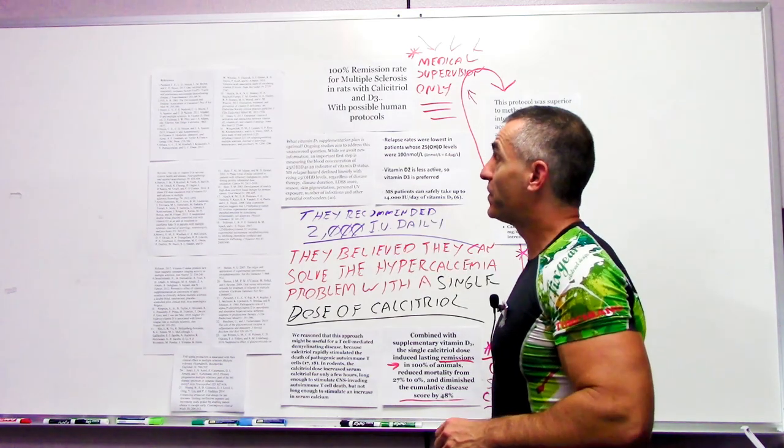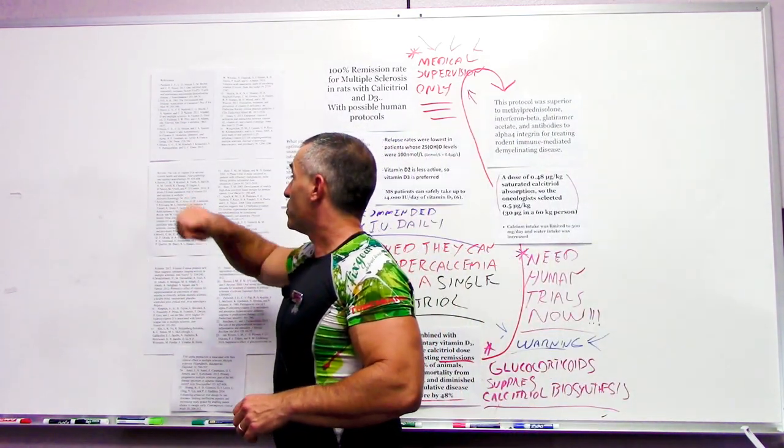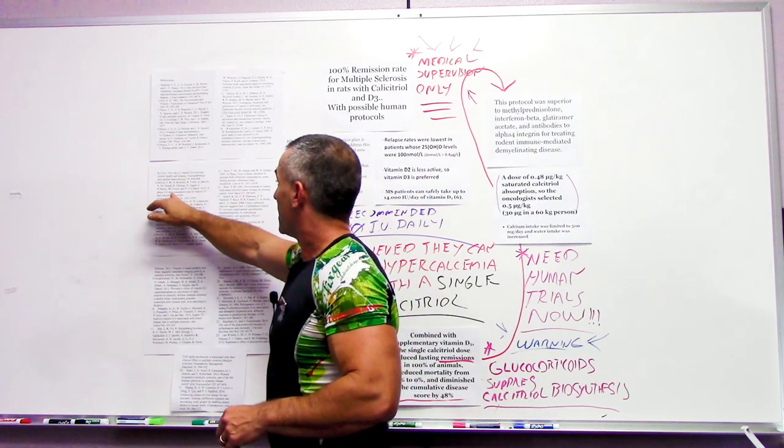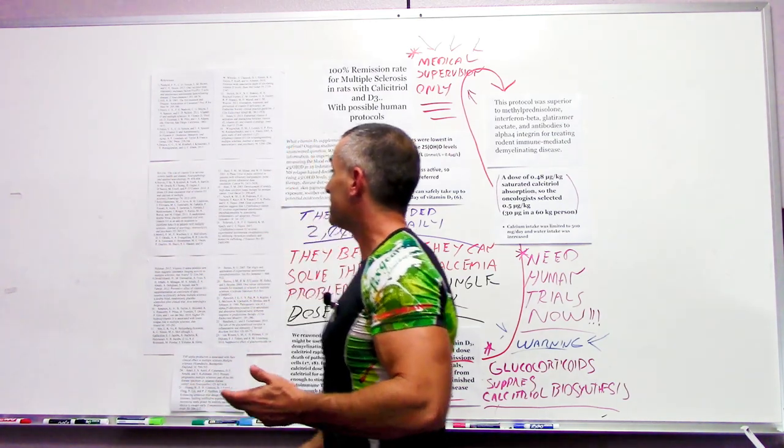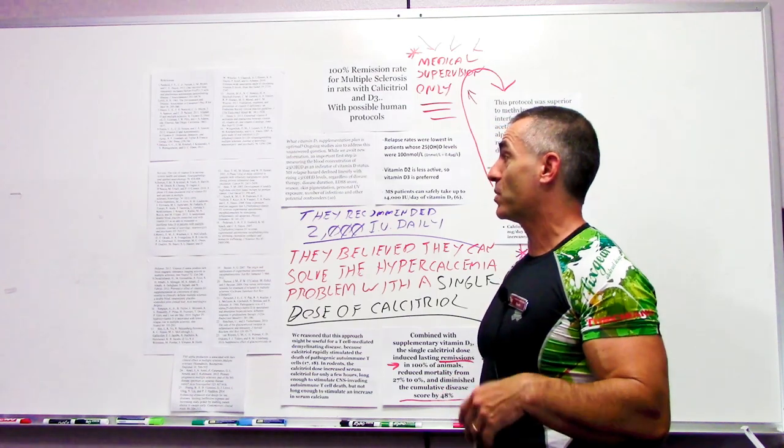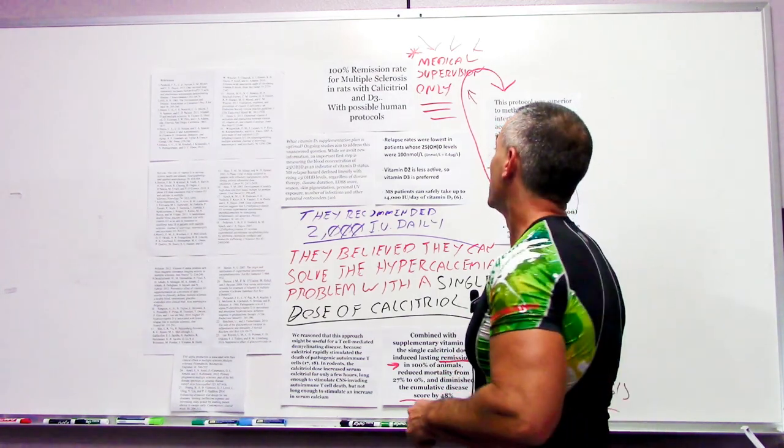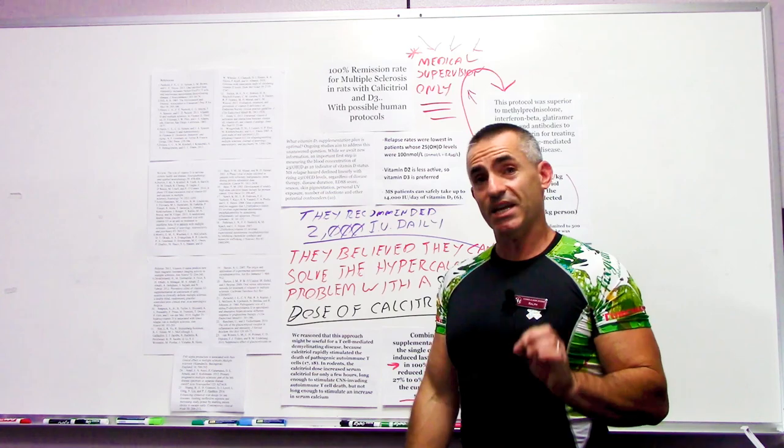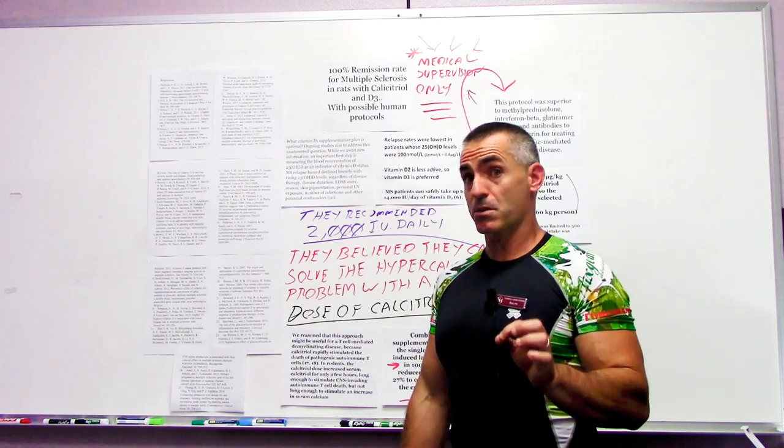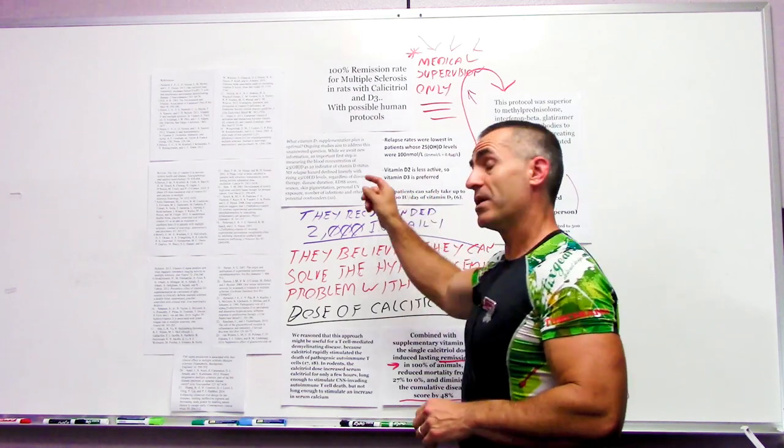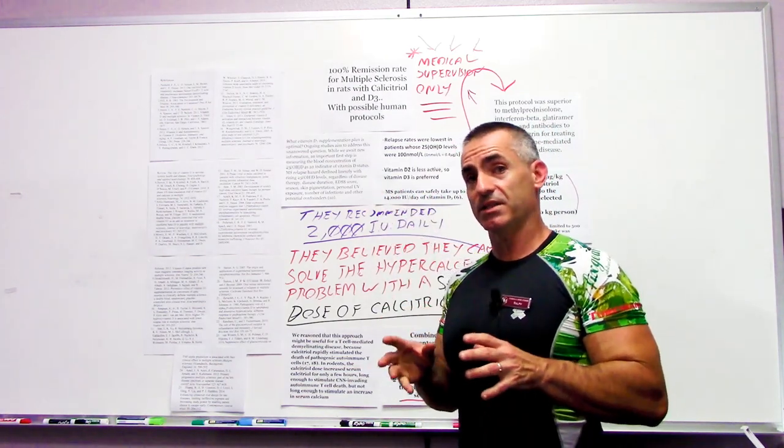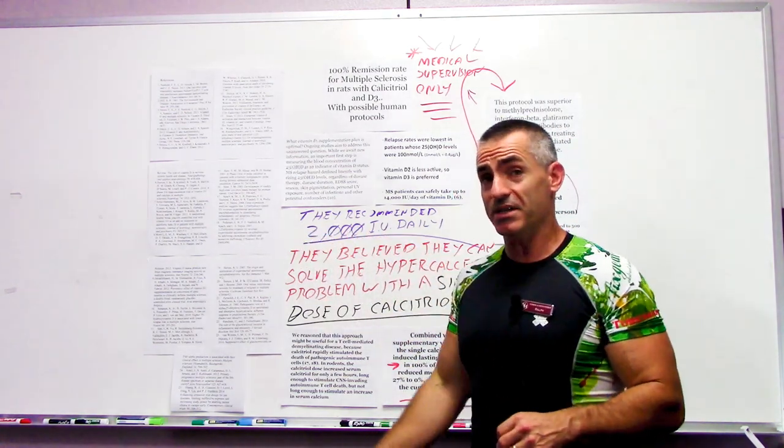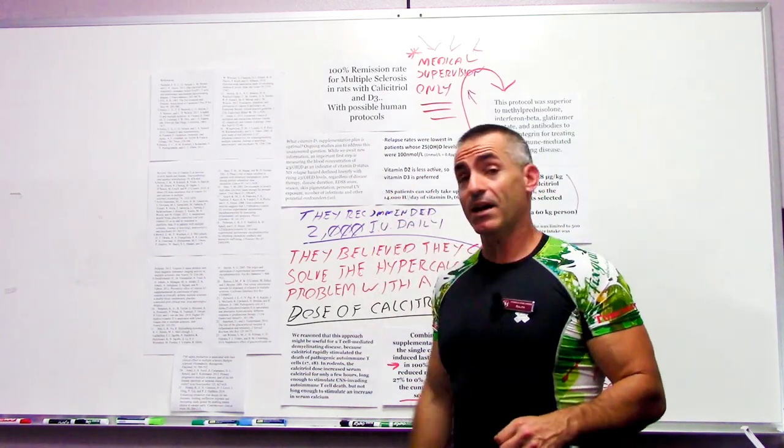Then they also looked at what was the upper safe range for multiple sclerosis patients in regards to vitamin D. According to them, it was a phase 1-2 dose escalation trial of vitamin D3 and calcium in multiple sclerosis, done in 2010 and published in Neurology 74, page 1852-1859. They found out that they can go up to 14,000 IUs a day safely with multiple sclerosis patients. That is an extreme number.